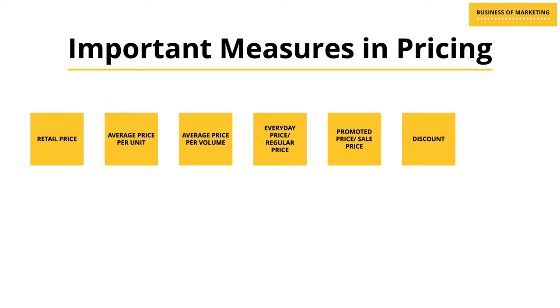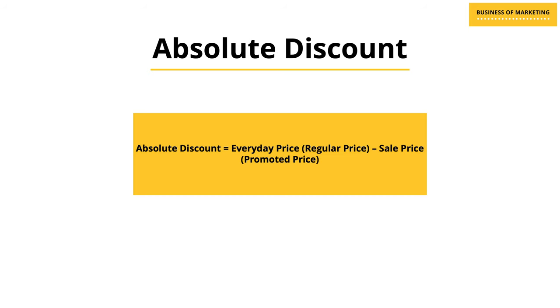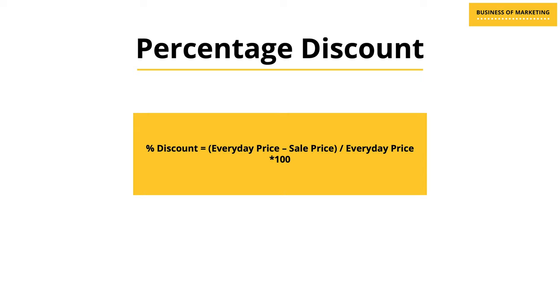The next measure is something we all love — and maybe a lot of marketers hate — and that is discount. We understand discounts intuitively, but because they are so important for both consumers and marketers I'm going to touch upon them today. Discount is the actual percentage of reduction in price to attract consumers to buy or to buy more of a certain product. Discount is shown in two ways: the absolute discount and the percentage discount. To calculate absolute discount, subtract the sale price or promoted price from the everyday price or regular price. To calculate percentage discount, the formula is up on the screen — it's something we all probably already know.